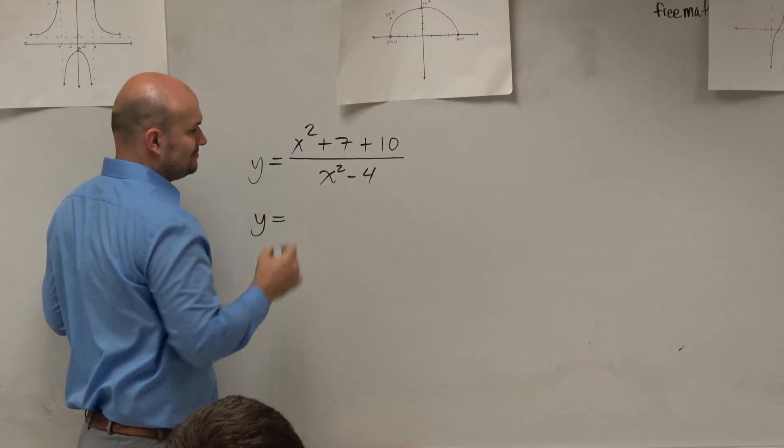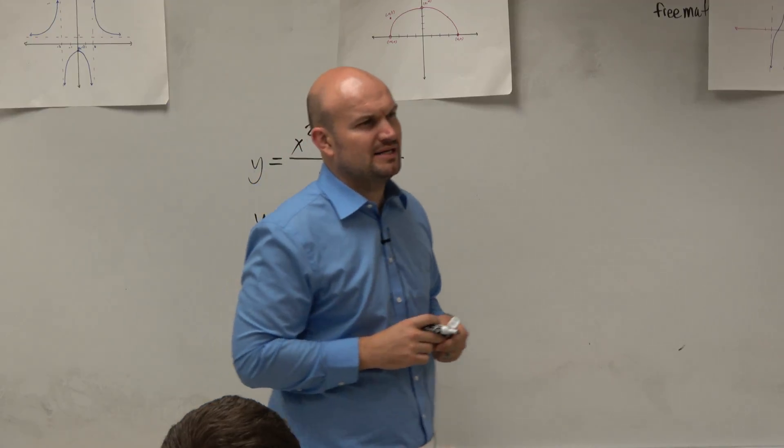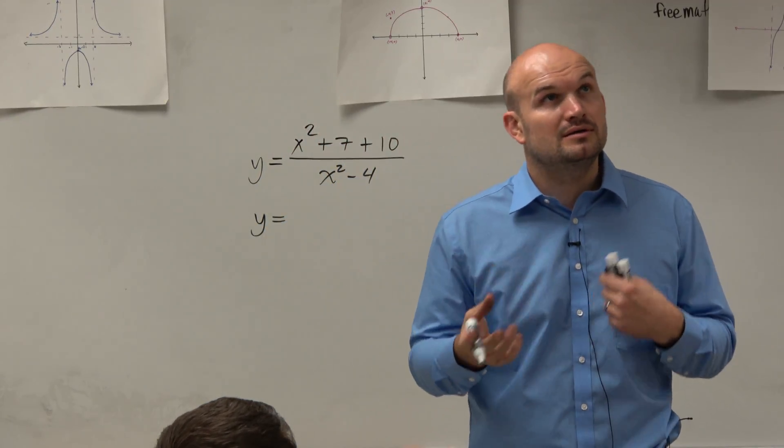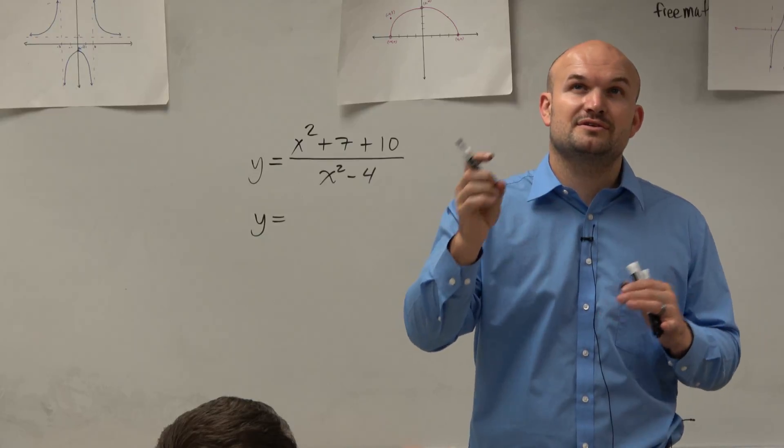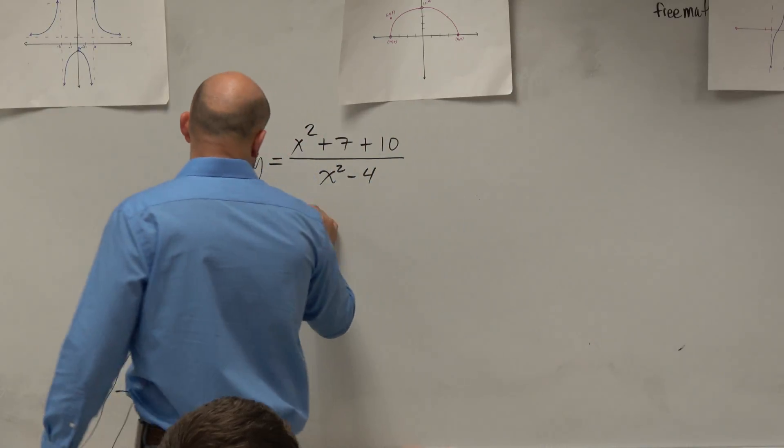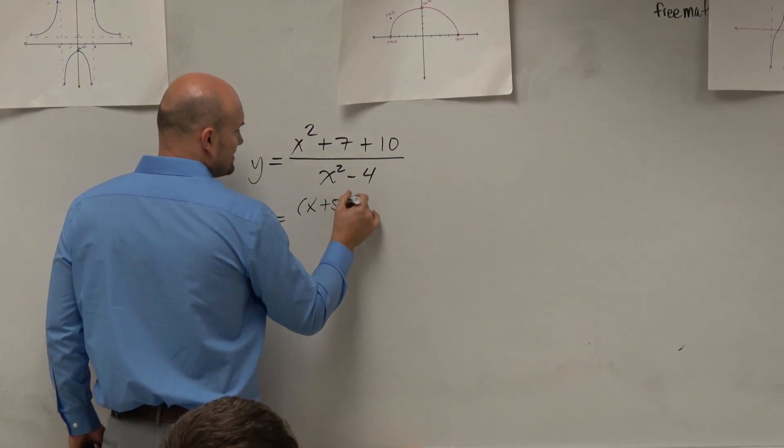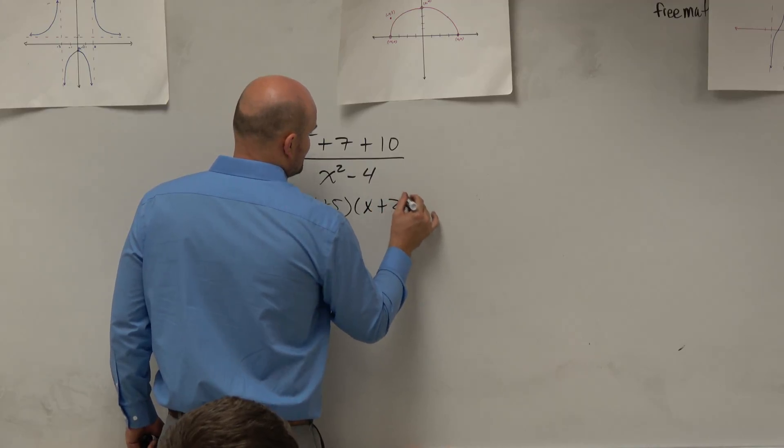And I could say, what two numbers multiply to give you 10, add to give you 7. You guys can think of the factors of 10, 5 and 2. Oh, 5 and 2. So x plus 5 times x plus 2.